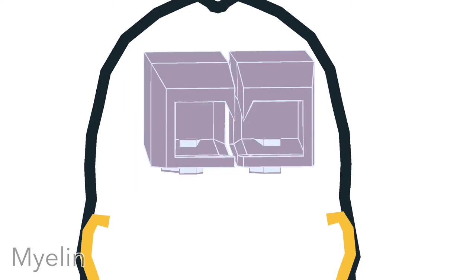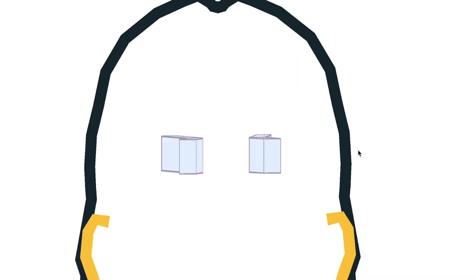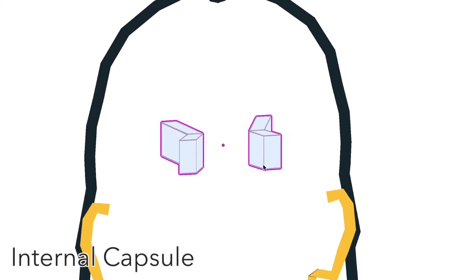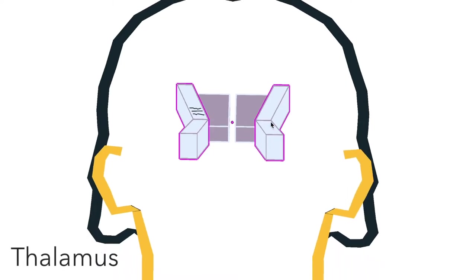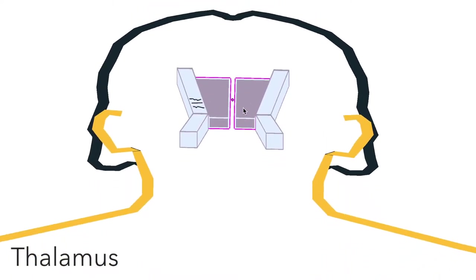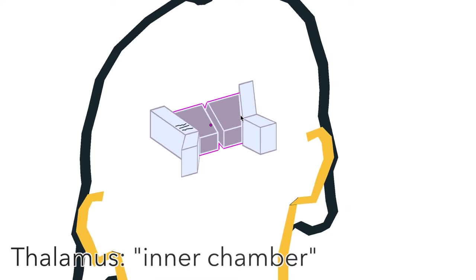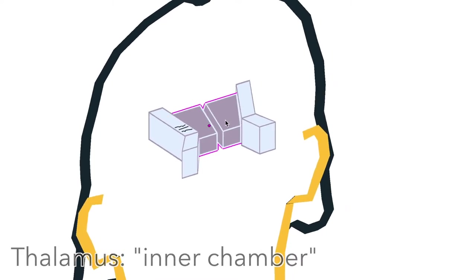And one of the main pathways for white matter in the brain is the internal capsule here. Many of the axons running through here are on their way to the thalamus, an important chunk of grey matter in the middle of the brain. Thalamus means inner chamber or bedroom in ancient Greek, the inner chamber of your mind.